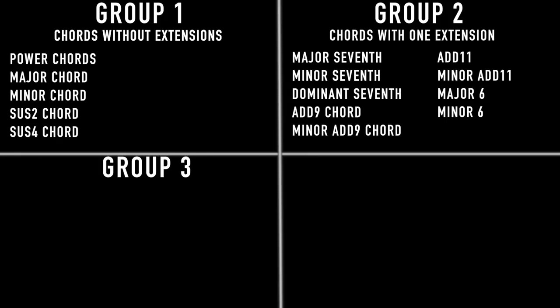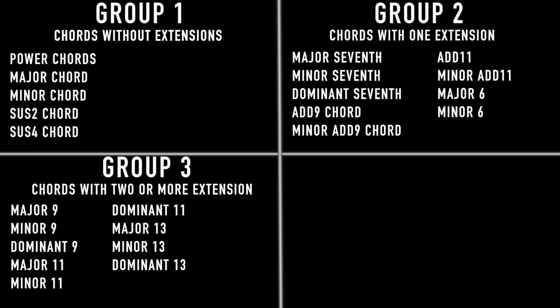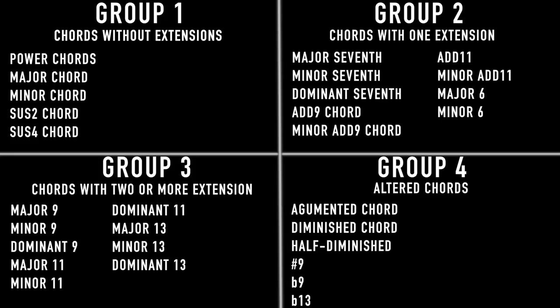Group three: chords with two or more extensions — major 9, minor 9, dominant 9, major/minor/dominant 11, and major/minor/dominant 13. Group four: altered chords, which have one or more altered notes — augmented chords, diminished chords, sharp 9, flat 9, and flat 13.